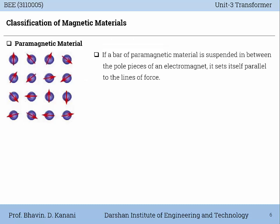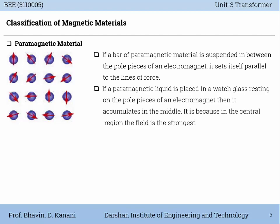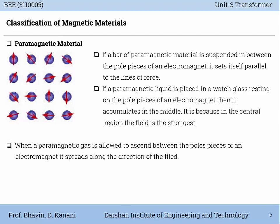Paramagnetic material: If a bar of paramagnetic material is suspended between the pole pieces of an electromagnet, it sets itself parallel to the lines of force. If a paramagnetic liquid is placed in a watch glass resting on pole pieces of an electromagnet, it accumulates in the middle, because in the central region the field is the strongest. When a paramagnetic gas is allowed to ascend between the pole pieces of an electromagnet, it spreads along the direction of the field. Examples: aluminium, manganese, and platinum are examples of paramagnetic materials.